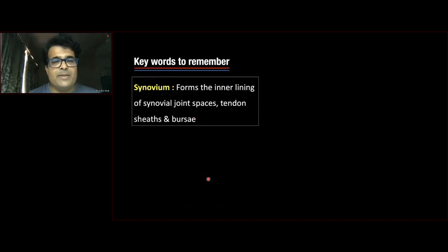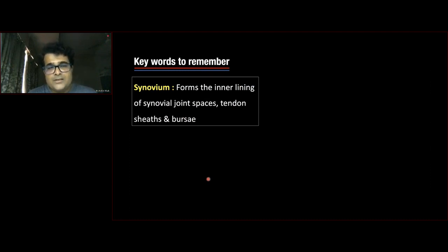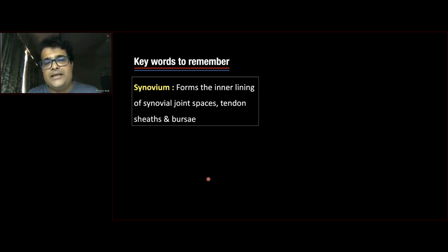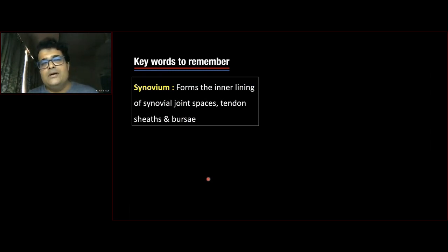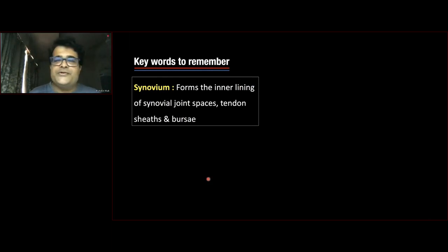There are key words I would like you to remember, especially for people not doing much musculoskeletal imaging. Let me start with what is synovium — it's the inner lining of all synovial joint spaces, lining tendon sheaths and bursae. In any inflammatory arthropathy, whether rheumatoid arthritis, psoriatic arthropathy, or spondyloarthropathy, the synovium gets inflamed, causing gradual corrosion of articular cartilage, erosions, joint damage, and ultimately osteoarthritis.